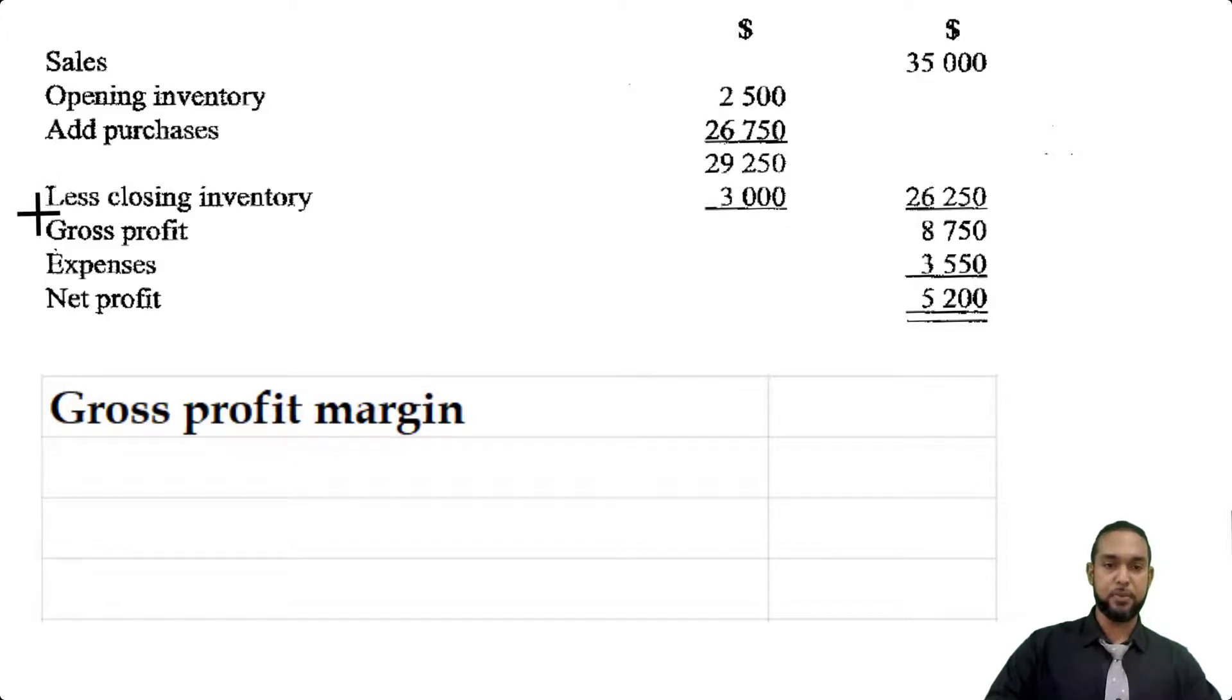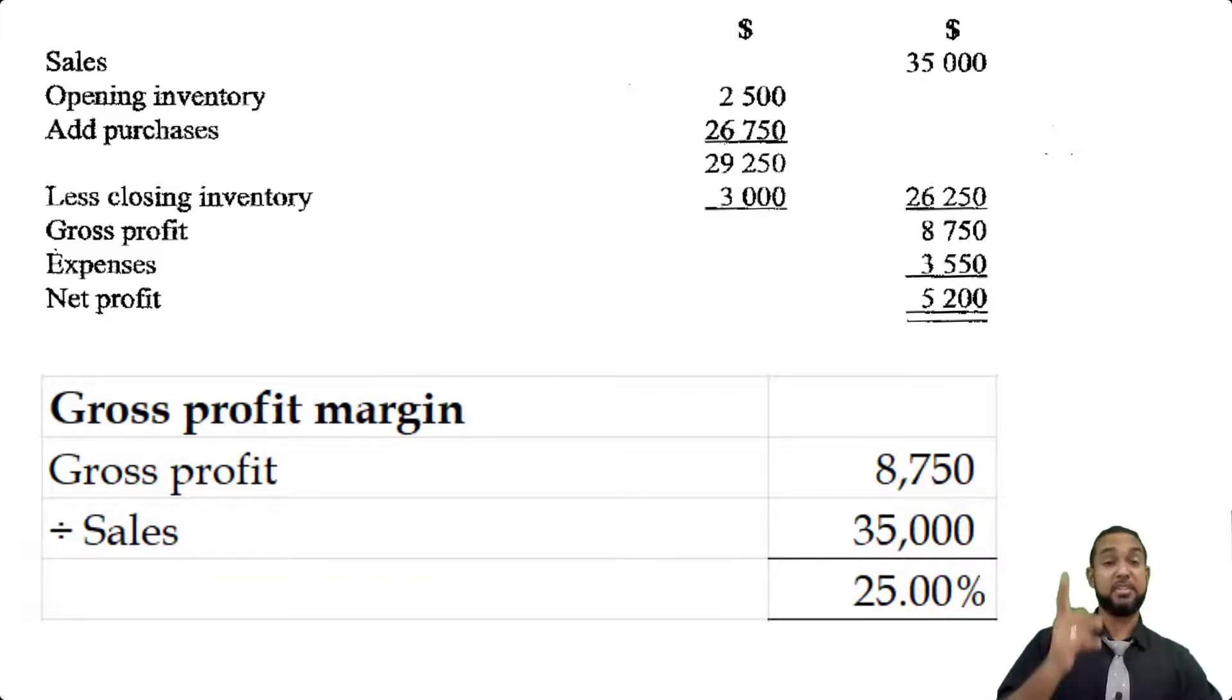Gross profit margin is the gross profit—what's the gross profit? Gross profit was 8,750, and we're going to divide that or express it as a percentage of sales of 35,000. So gross profit of 8,750 divided by net sales of 35,000 gives us 25% exactly as the gross profit margin. That's the percentage of sales that remains as gross profit after covering your cost of sales.